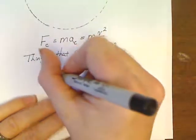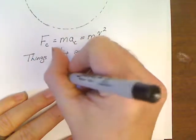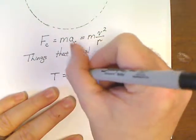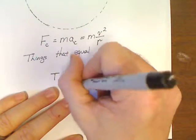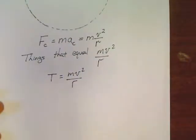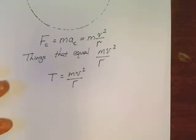If it's a rock attached to a rope, then it's the tension. You've got a tension equal to M V squared over R. That is probably the most common situation, something attached by a rope or something.